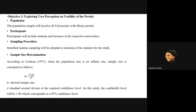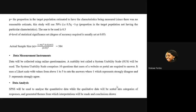The third objective involves exploring user perception on usability of the portals. The population will again be universities with library portals, and participants will include students and lecturers at the respective universities. The sampling procedure will involve stratified random sampling. For sample size determination, Krejcie and Morgan (1977) provide a formula for an infinite population size — since at this stage I do not know exactly how many universities will have library portals. When I substitute the values, the actual sample size comes to 384.